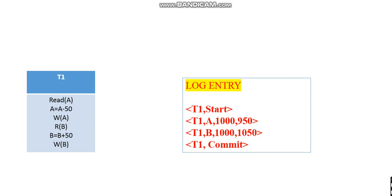For this transaction, the log entries will be: T1 comma start; then T1 comma A comma 1000 comma 950 — T1 is performing modification on data item A, its previous value is 1000 and modified value is 950. Likewise, T1 comma B comma 1000 comma 1050 — performing write on data item B, old value for B is 1000 and new value is 1050. Then T1 comma commit indicates T1 is committed.